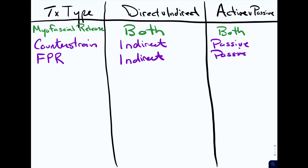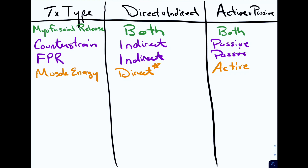Another very common treatment type is muscle energy. Muscle energy is classically direct — though there are some rare times it can be used indirectly, for the purposes of what you should know it's typically a direct technique. You have the patient actually using their muscles to help you with the technique, so if the patient is making any kind of motion, that's an active technique. There's also HVLA — high velocity, low amplitude. HVLA is always going into the barrier, so it's a direct technique. However, the patient is not using their muscles at all; it's all the practitioner, so it's a passive treatment.